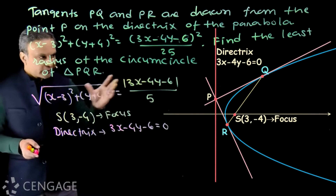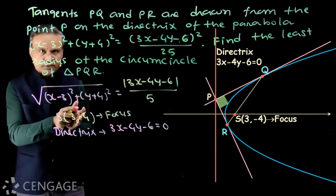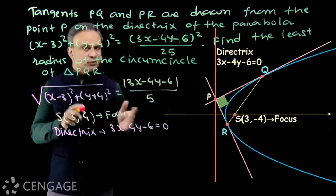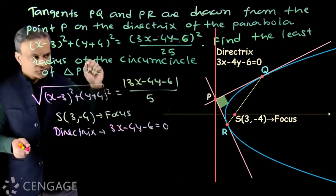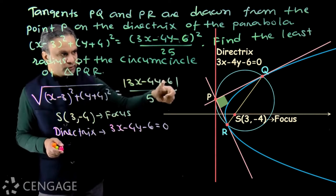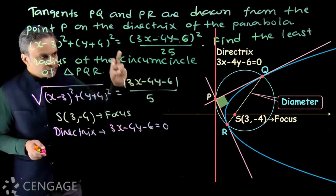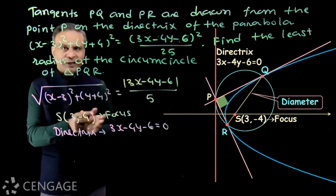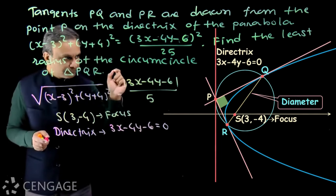This triangle is right-angled at vertex P, because tangents drawn from a point on the directrix are perpendicular to each other. So the triangle is right-angled at point P. Therefore, for the circumcircle of triangle PQR, QR will be the diameter. And QR is a focal chord, because when tangents are drawn from a point on the directrix, the chord of contact is a focal chord.